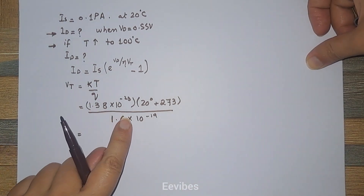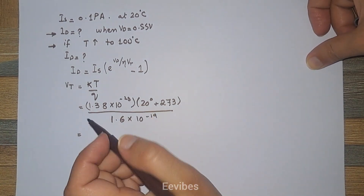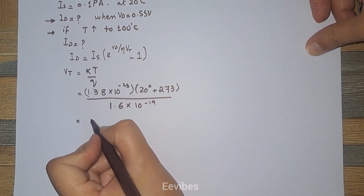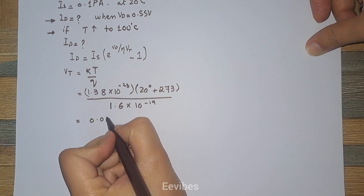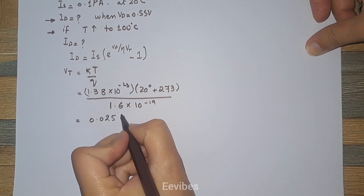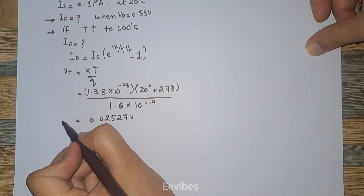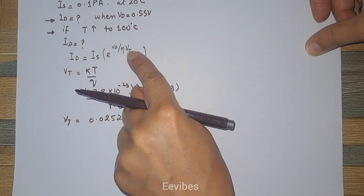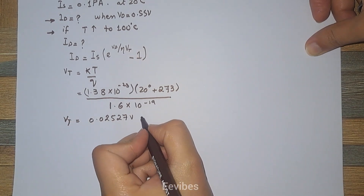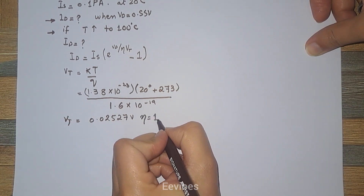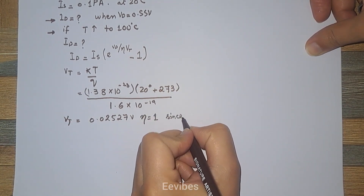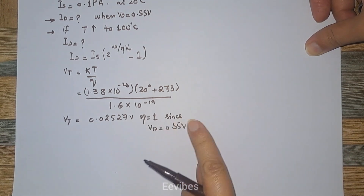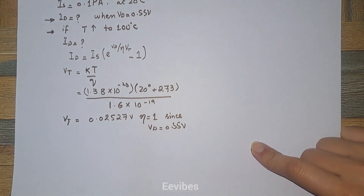When you simplify this expression, you get the thermal voltage value equal to 0.02527 volts. Assuming zeta ζ = 1 since VT is approximately 0.5 volts, let's substitute the values and find the diode current for the given parameters.